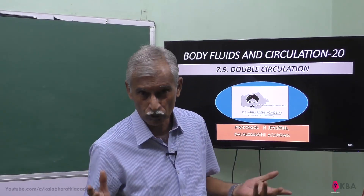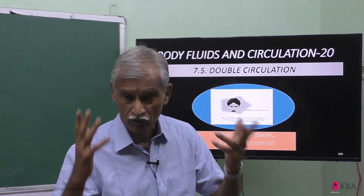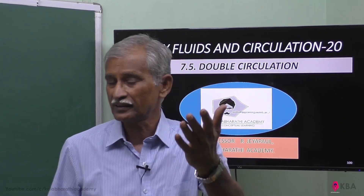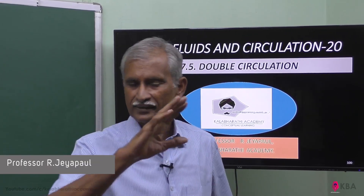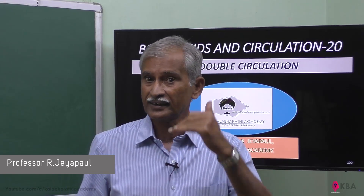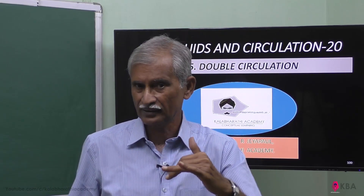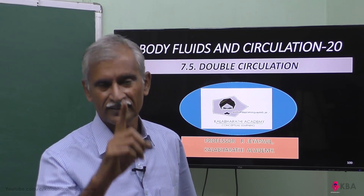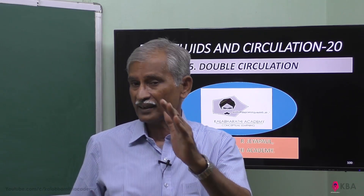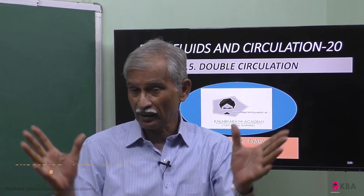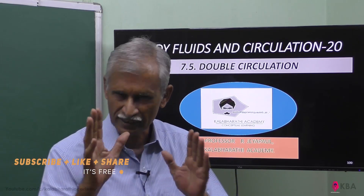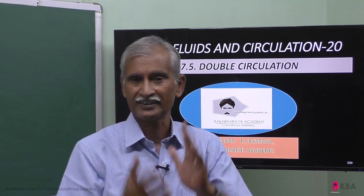Good morning, students. Now we will go to double circulation. What is double circulation? There is pulmonary circulation and there is systemic circulation. Blood going to the lungs is pulmonary circulation. Blood from the heart to all organs of the body is systemic circulation. This is called double circulation.